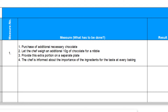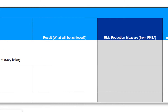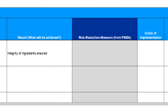Additionally, the chef is informed about the importance of the ingredients for the taste at every baking. Then we specify the result which should be achieved by the implementation: integrity of ingredients ensured. The definition of the expected result enables all stakeholders to form an impression of the intended effect of the solution and later facilitates a before-after comparison.